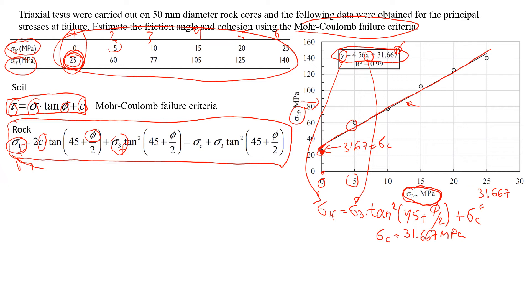So if we analyze all the six test results we will find out that unconfined compressive strength sigma c is 31.67 MPa. Okay so now let's move on and we're going to look at this component which says 4.56 times x, right. So we know that x is sigma 3 at failure and it's gonna be here sigma 3 at failure which means that 4.56 that will be this one.